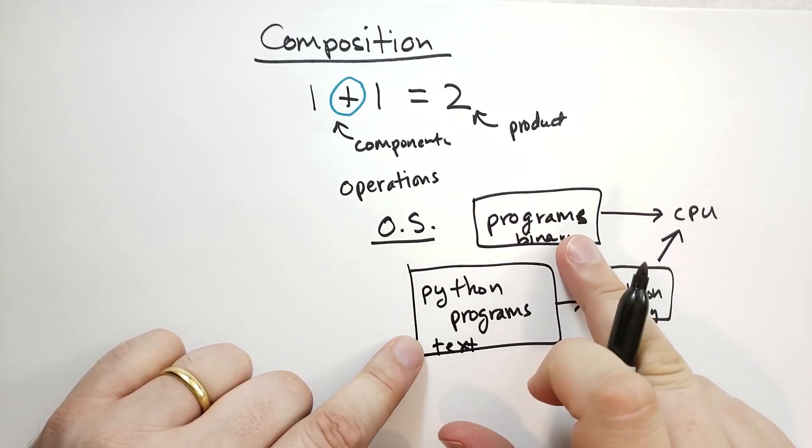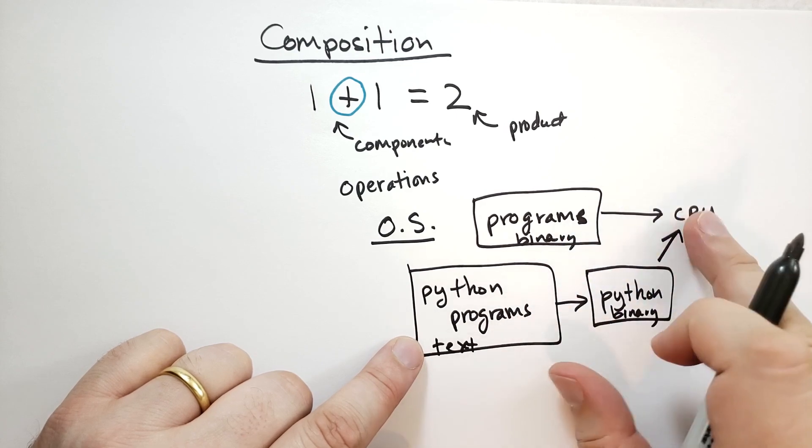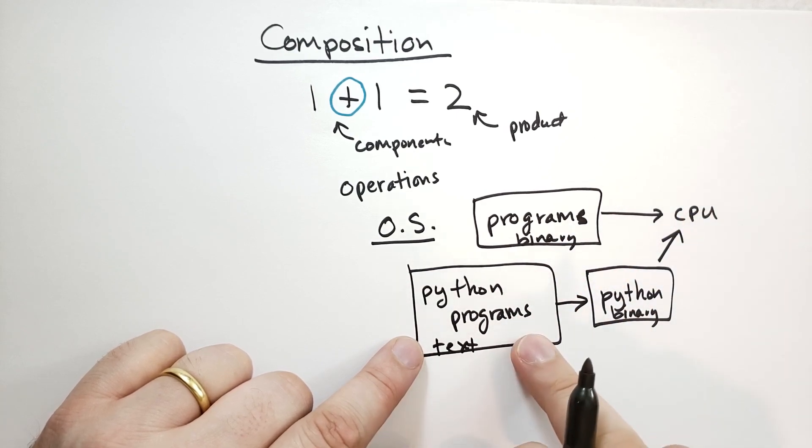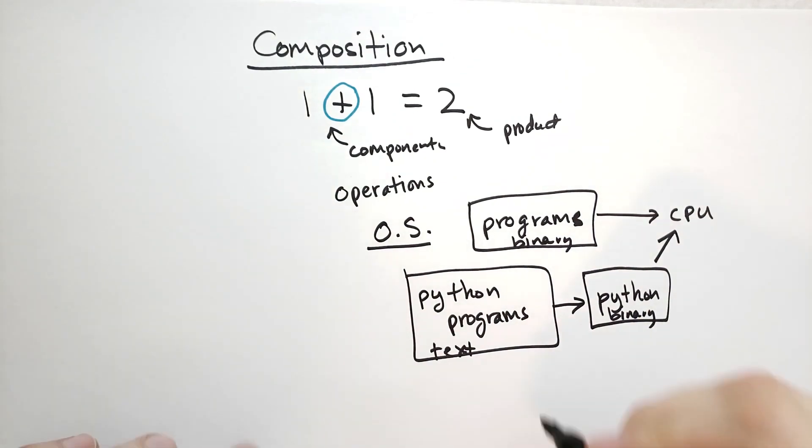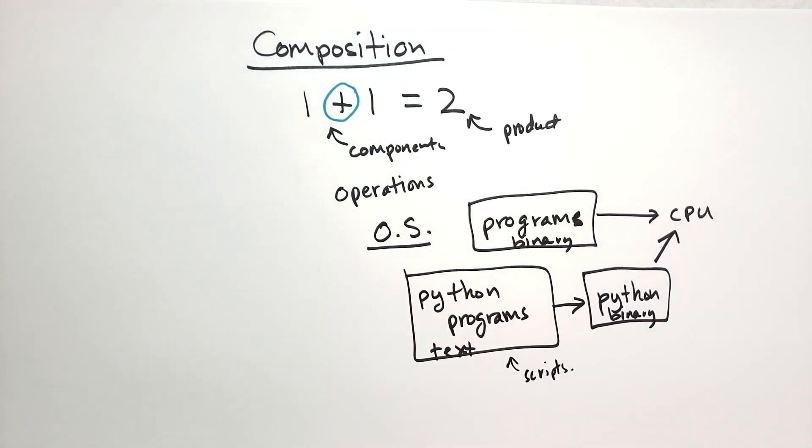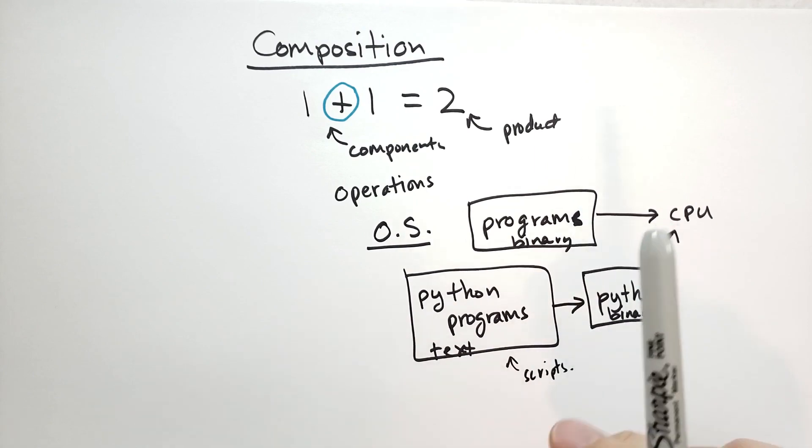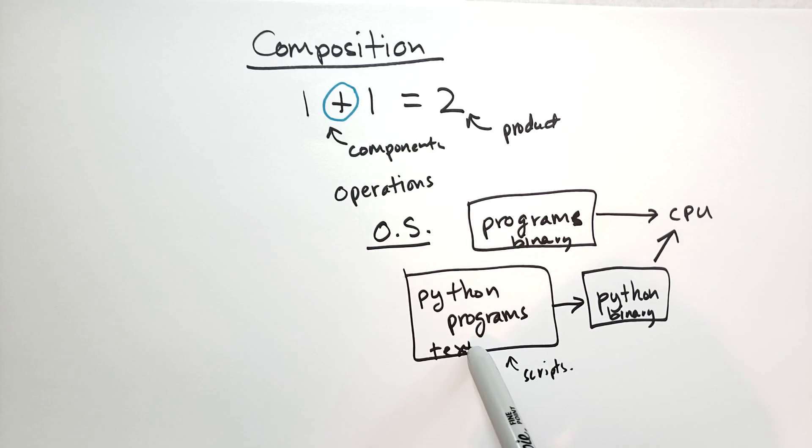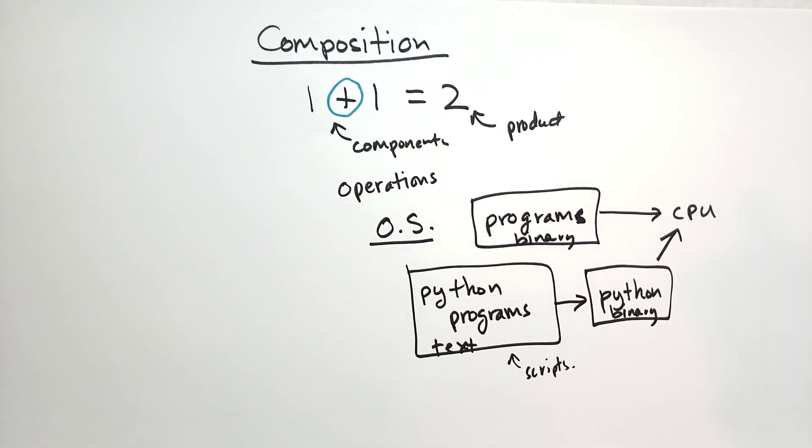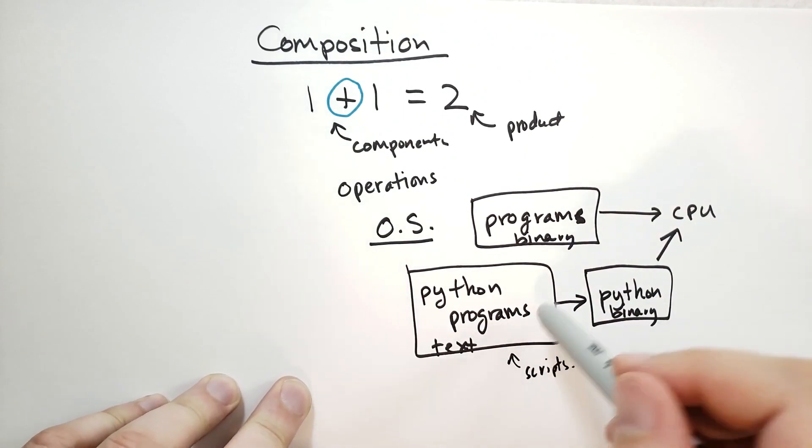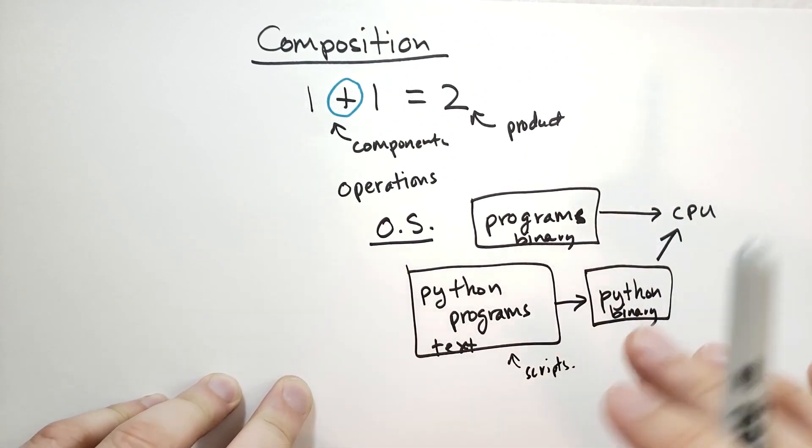Now, are these Python programs actual programs? No, they're not. Because you can't run them on a CPU. But they behave just like programs, as long as you invoke them with the Python binary. So, we often call these scripts. But in my career, I didn't think of scripts as anything different than programs. Why? Because they behave exactly like programs. Once you put this adapter in, these text files become things that the CPU can actually run. And this style of composition, where you take an adapter and compose it with something, to turn it into something else, this is very common in programming.